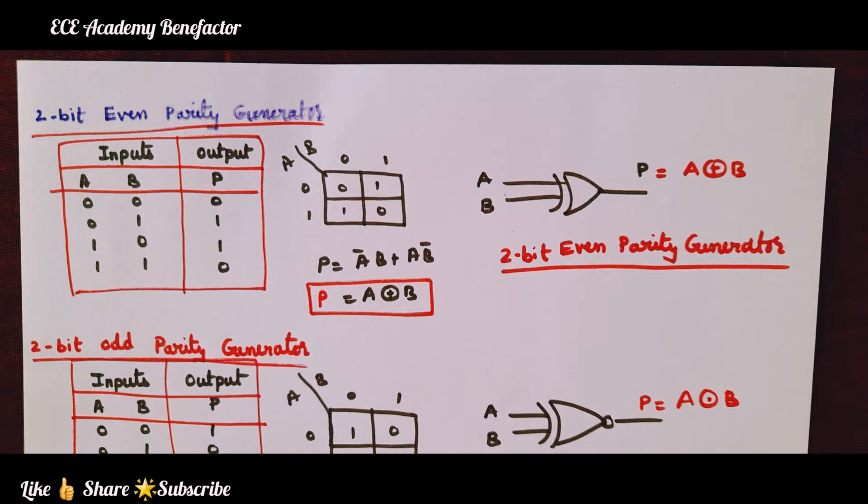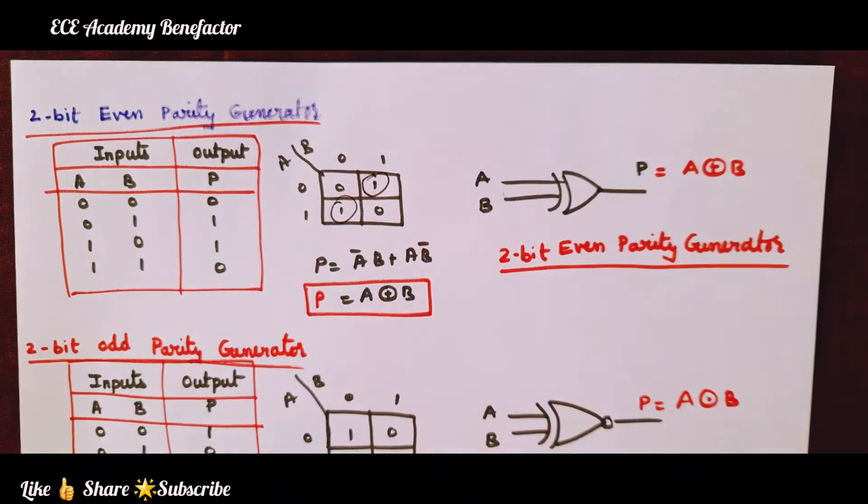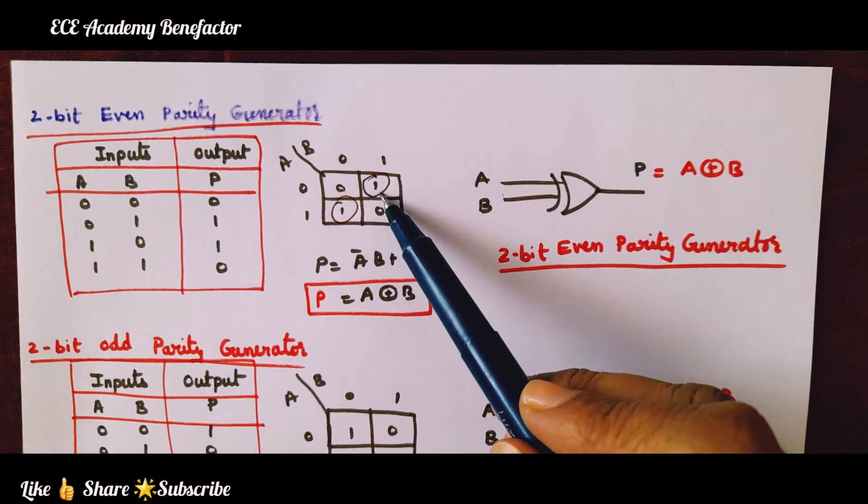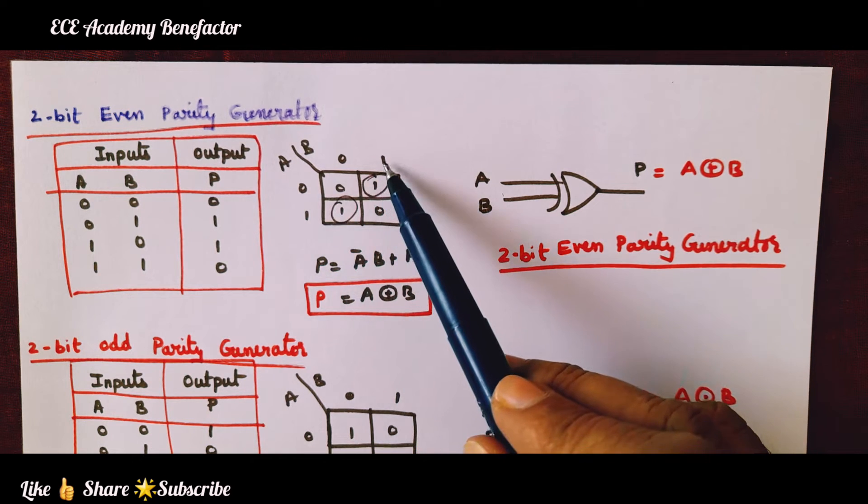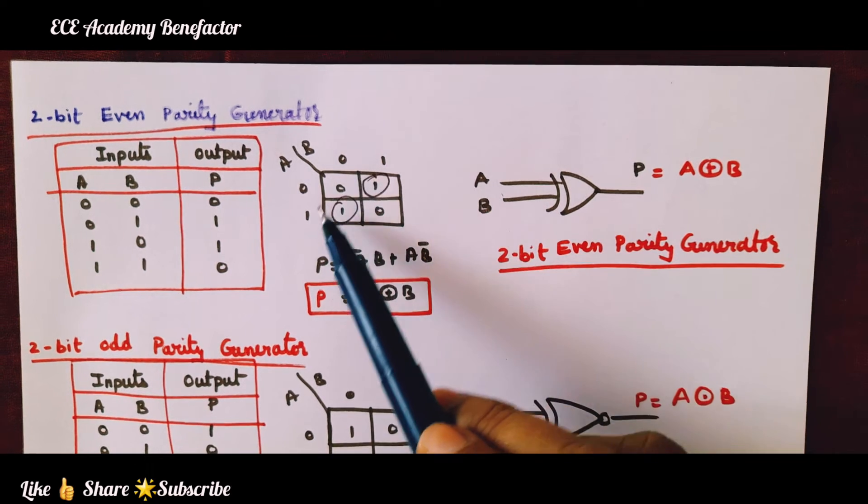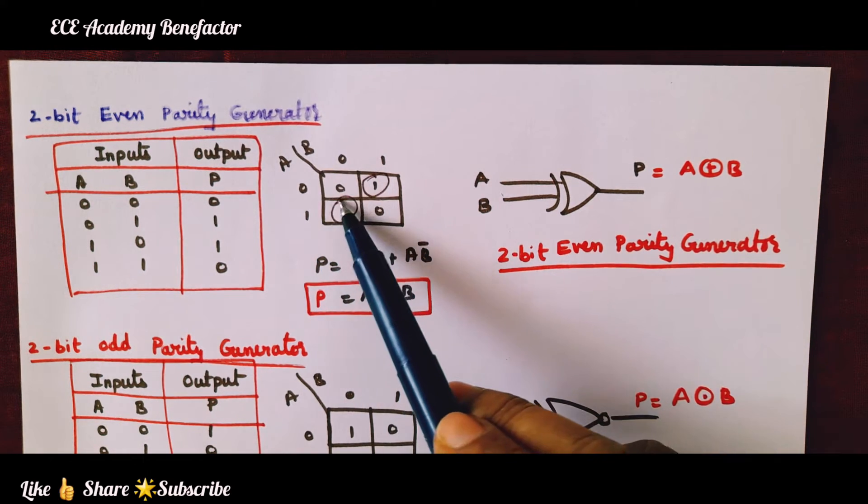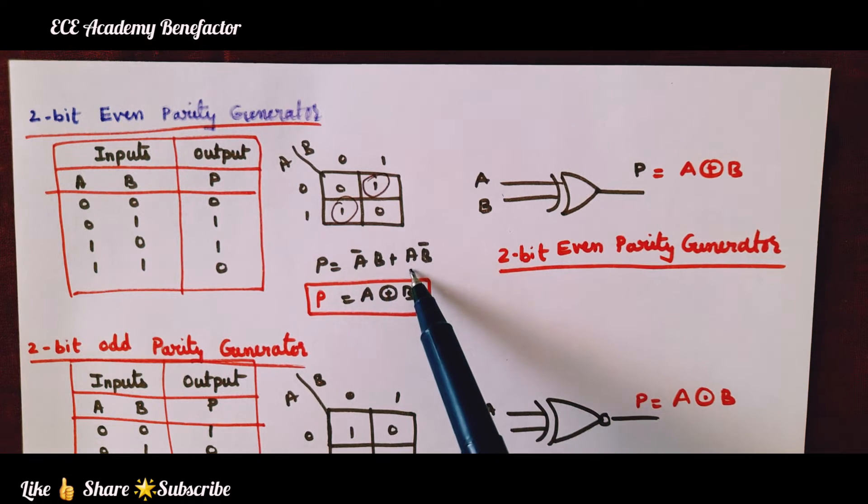Now we have to find the grouping. There is no pair required, only single 1s are there. For this one it will be A bar B. For this one it will be 1,0: 1 means A, 0 means B bar. So for this the term will be A B bar.